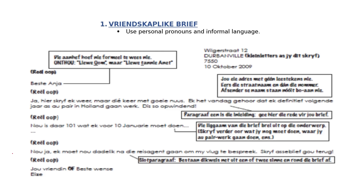You start your letter on the right-hand side of your page and you write down the address. I would suggest you memorize an address and use it for every single letter you write so you don't forget. Most importantly in Afrikaans, the number of your house goes after your street name — for example, Wilgestraat 12. So the number is always at the end. Then you write Durbanville, or wherever you come from, in small letters — not in caps. Then you have your postal code. Just pick an address, make it up, and use it for everything.